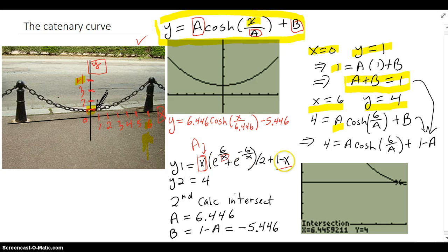And you want to find out what value of A makes it be 4. So you graph that on your TI. Do a second calc intersect. And it turns out that the X, which we know is the capital A, is this. And the B is 1 minus A, which is this.